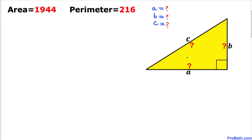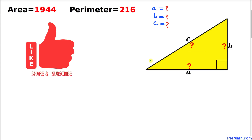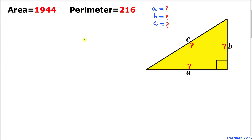Welcome to pre-math. In this video tutorial, we have a right triangle whose area is 1944 and the perimeter is 216, and we are going to find its side lengths a, b, and c. Please don't forget to give a thumbs up to this video, so let's go ahead and get started with the solution.